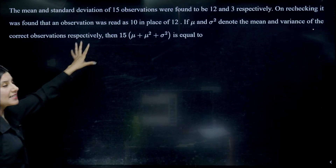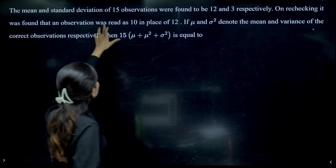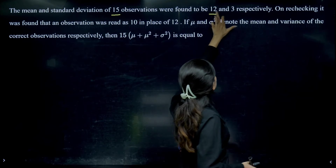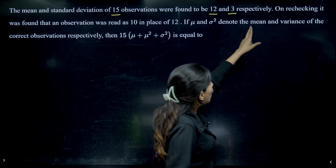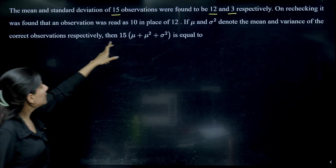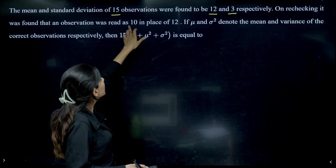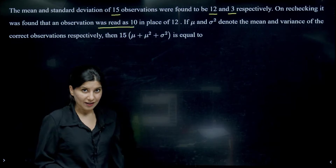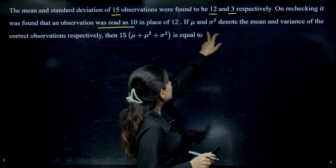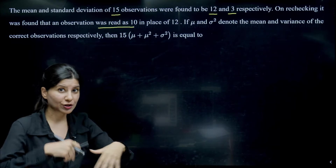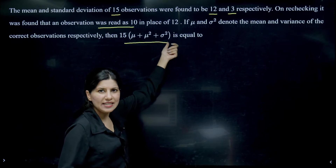Now the third type. Again, JEE Mains 2024: mean and standard deviation of 15 observations are given as 12 and 3 respectively. On rechecking, they realized that one observation was mistakenly read as 10 instead of the correct value of 12. Mu and sigma-squared denote the mean and variance of the corrected observations. We need to find these.